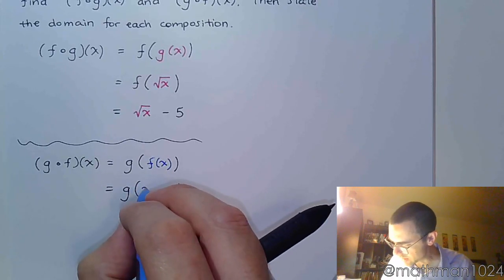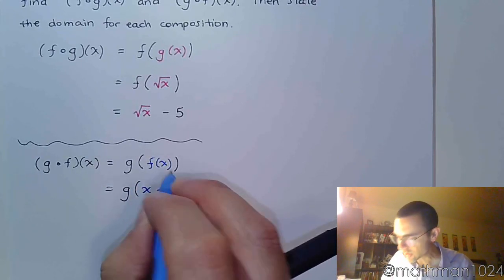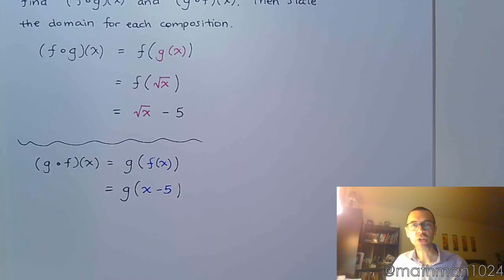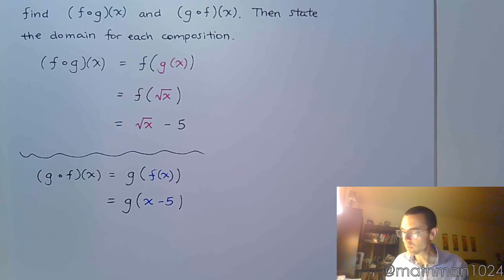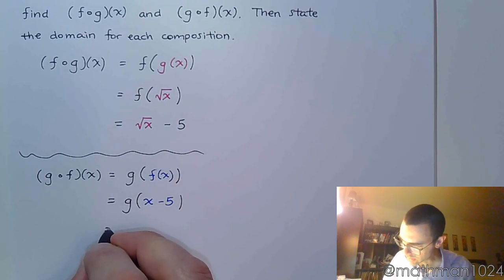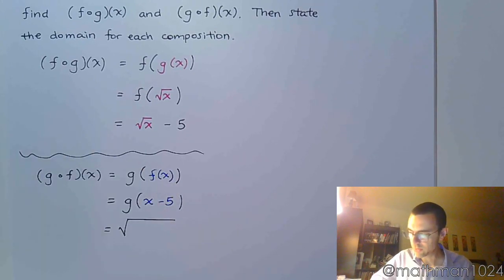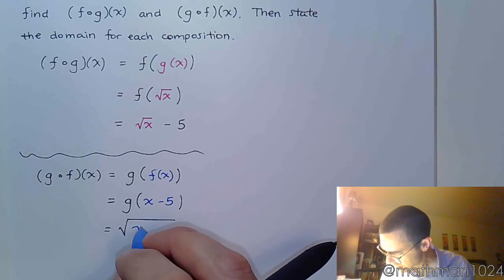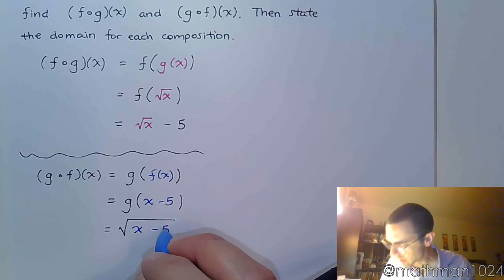f of x is x minus 5, and so that's what I'm going to be plugging into g. So g was the square root of x, so I have the square root of, in this case, x minus 5.